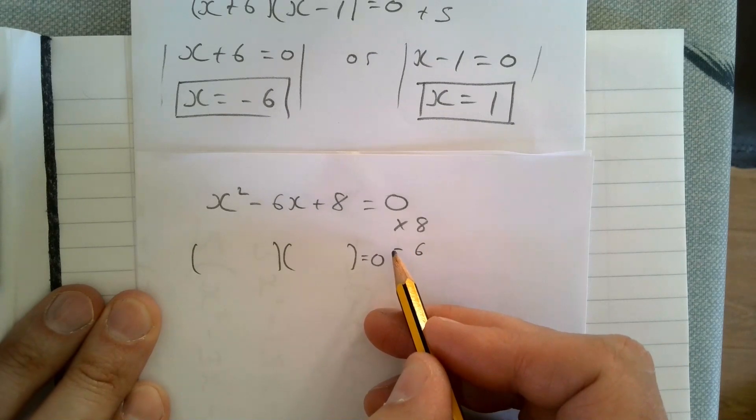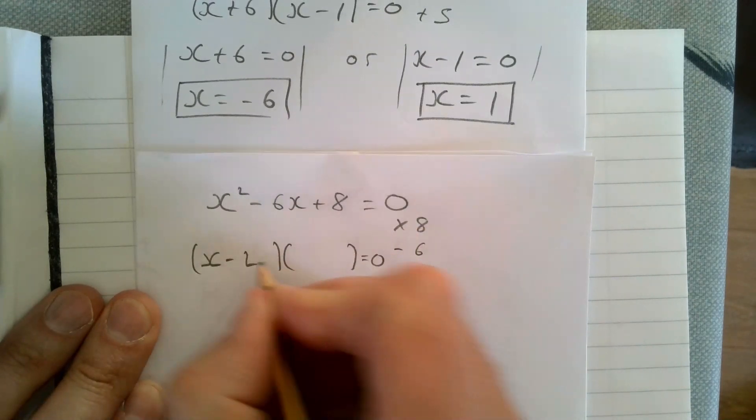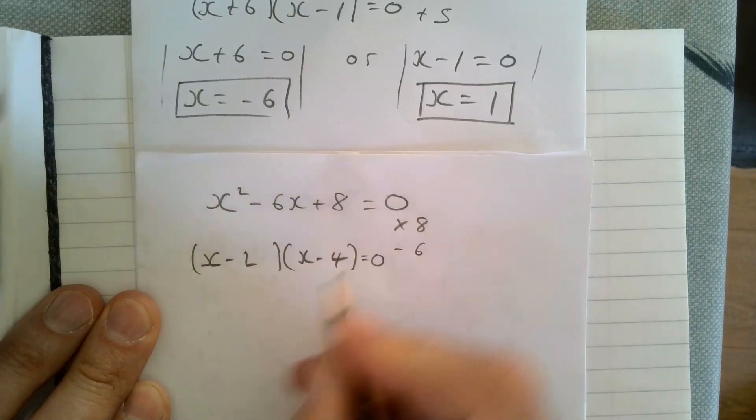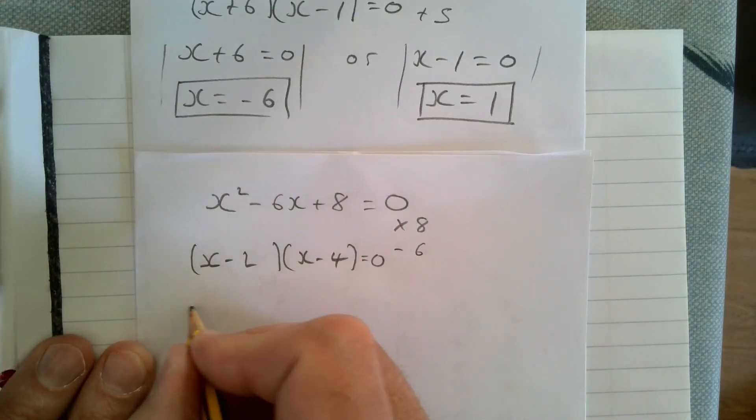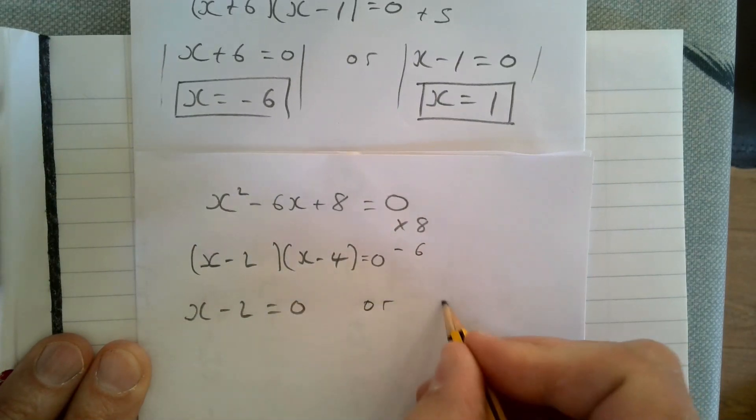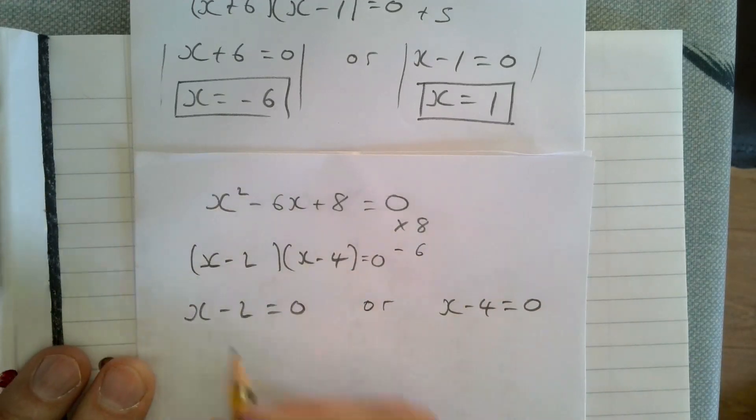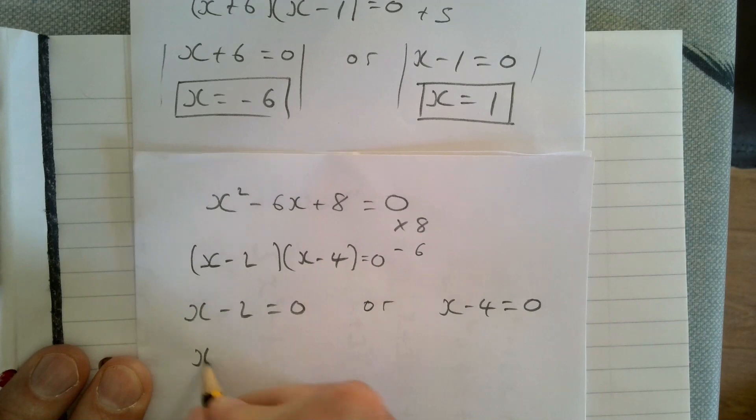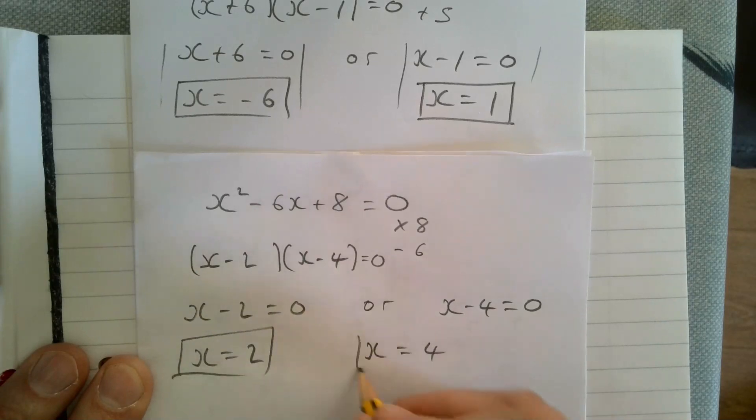It's going to be minus four and minus two. So we're going to have x minus two and x minus four—doesn't matter which way around you put those. That either means x minus two equals zero, or x minus four equals zero. That's going to give us x equals two or x equals four.